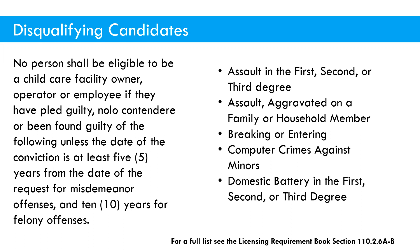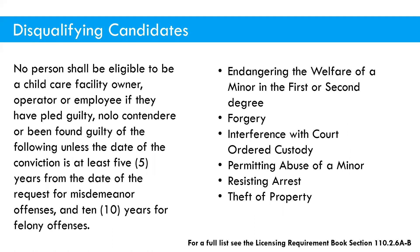Some examples of disqualifying offenses include assault in the first, second, or third degree; breaking or entering; computer crimes against minors. There's also endangering the welfare of a minor in the first or second degree, forgery, permitting abuse of a minor, and theft of property. The full list is in your licensing handbook in section 110.